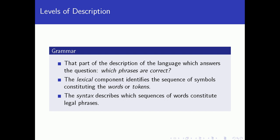If we look at the very different levels of description, we can start with grammar. In this context, you can think of the different levels of description of a natural language, because many of these levels actually apply also to programming languages. Starting with grammar, this part of the description of a language has to do with answering questions like: which phrases are correct? Does a sentence follow the grammar of a language?